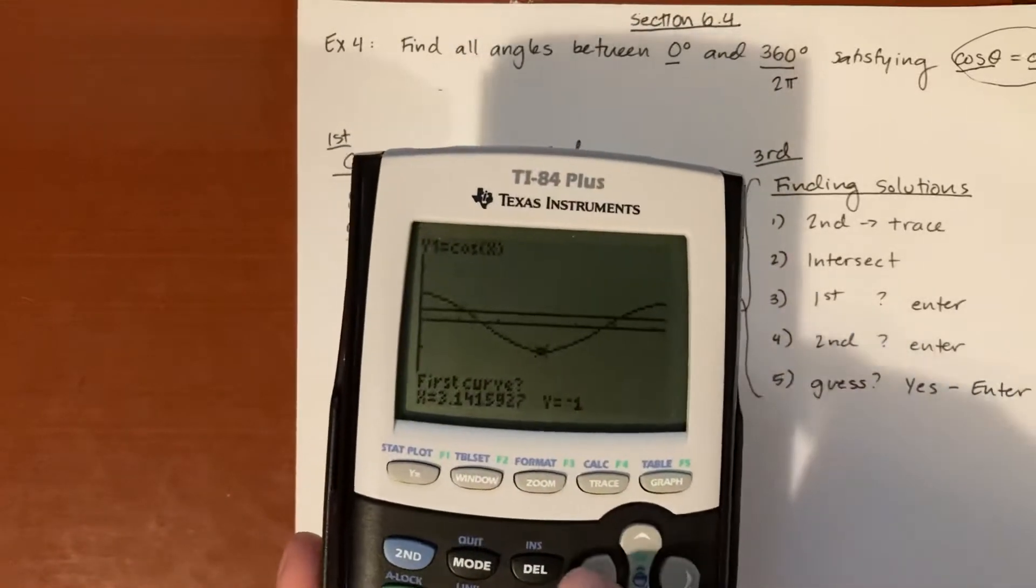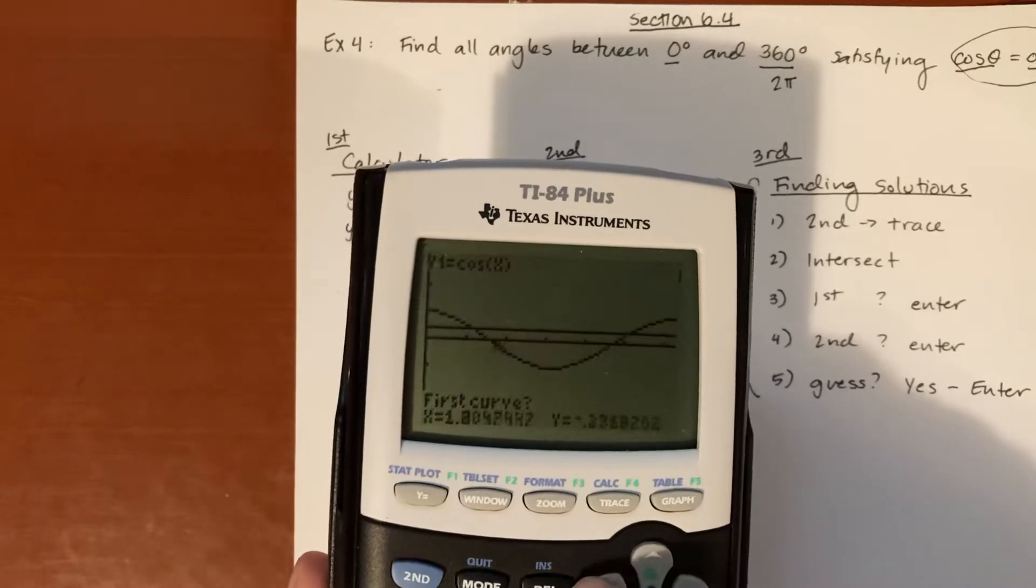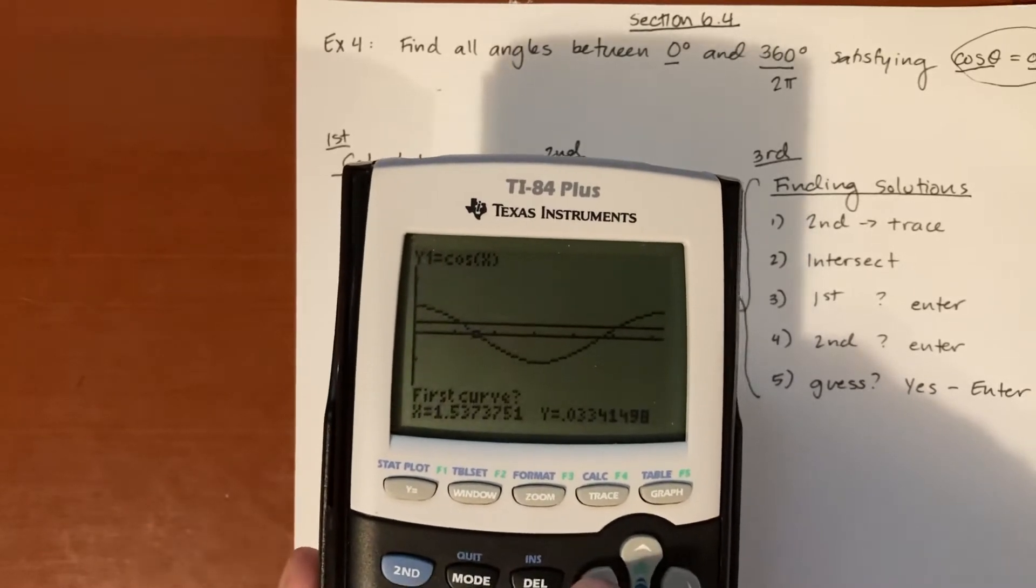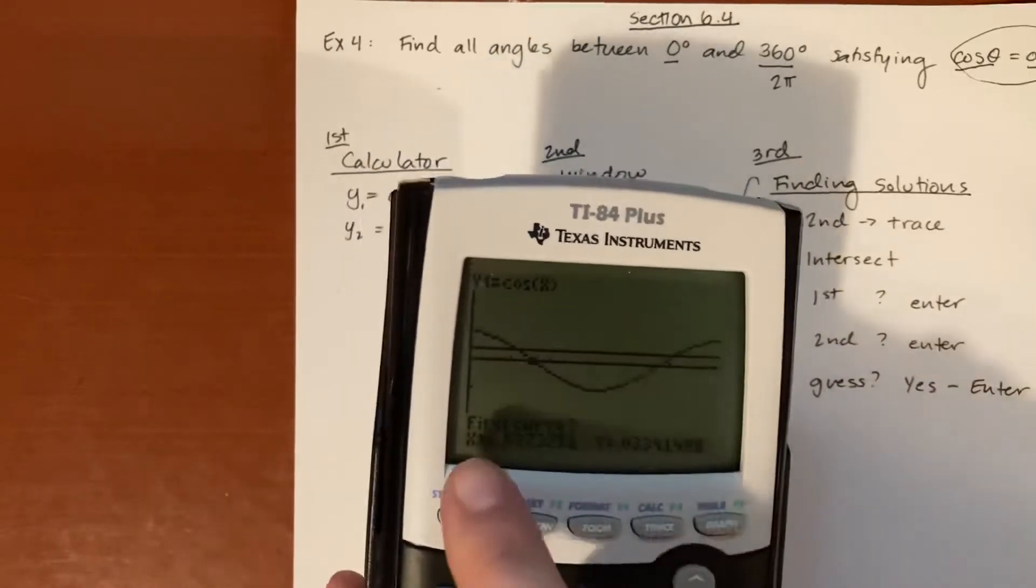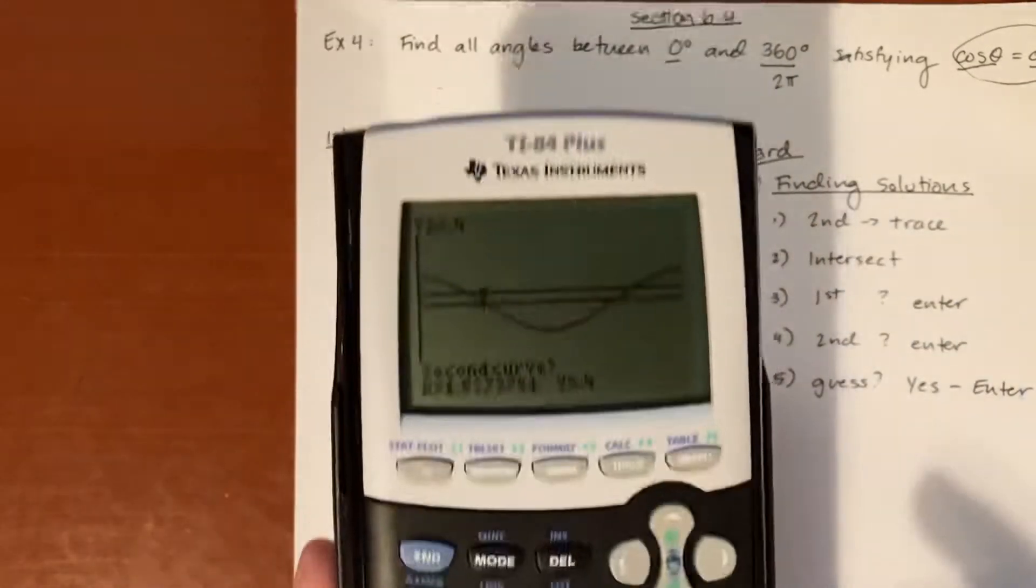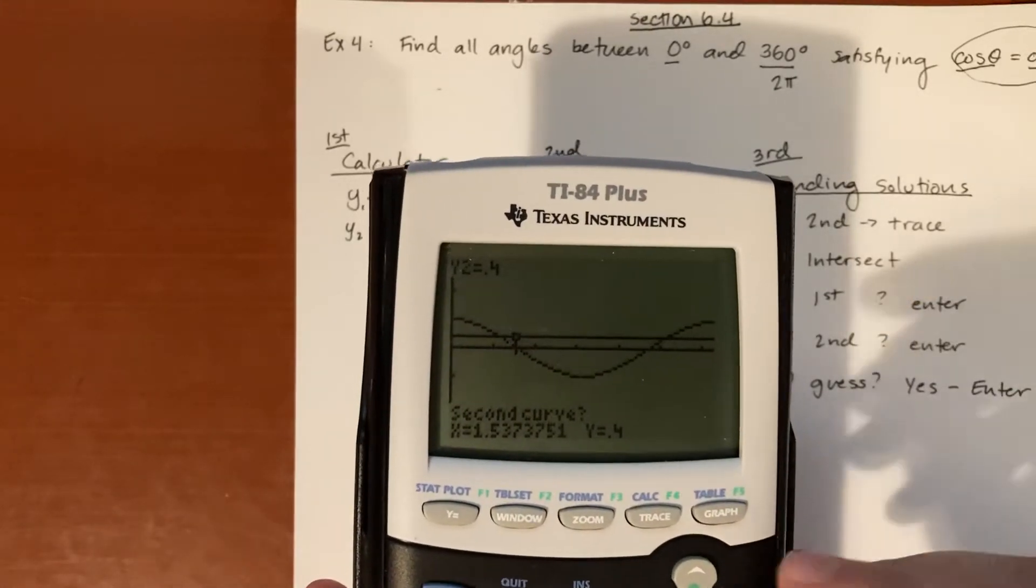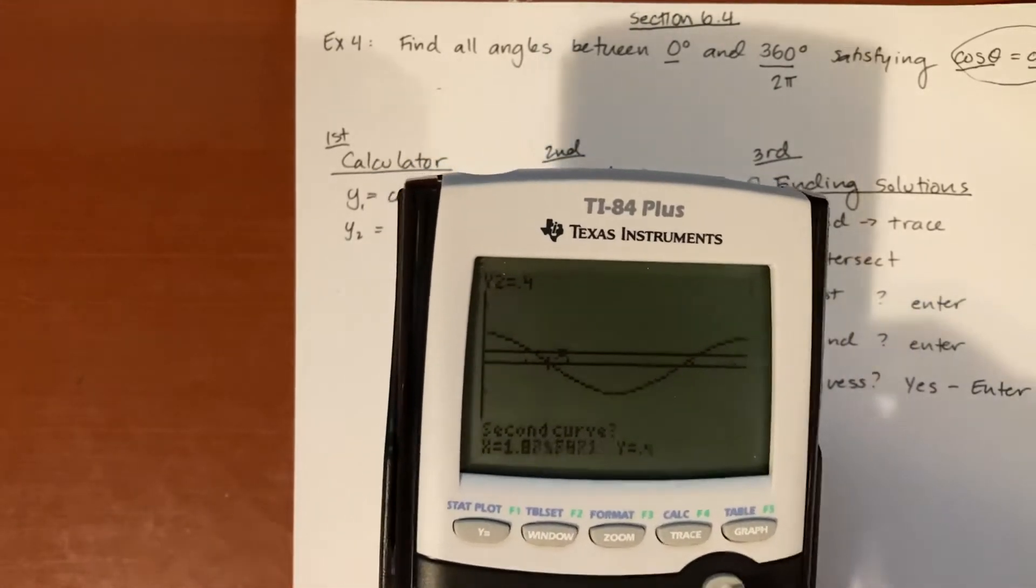And now we got this little button hanging out, so we're going to go ahead and find the first one. So I'm going to follow this curve until I'm pretty close to the intersection. It's asking me if that is the first curve and I'm going to say yes it is the first curve, so hit enter. The little blinking button will appear again on the other curve, the straight one.